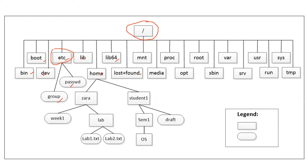In the diagram, items in square boxes are directories, while items with smooth curves are files. Under home, for student one, every user's home directory is located under slash home. At the moment we have two users: student one and also Zara.